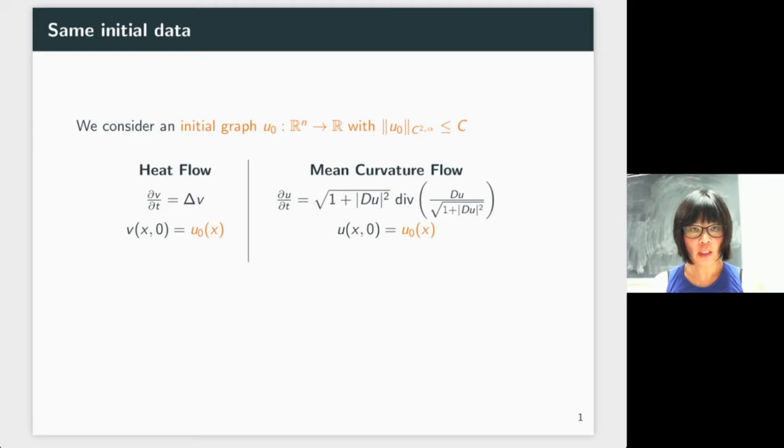For both the heat flow and the mean curvature flow, long time existence has been proven. For the mean curvature flow, it's the result of Ecker-Huisken from 1989, and for the heat flow, it's a classical result.